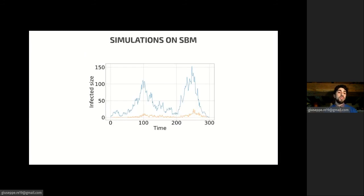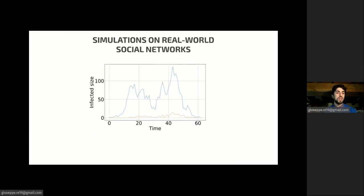We can see here that the number of infected nodes over time for a certain range of parameters gives twin peaks, so recurrence. In orange, you see the number of second infections. So you can see that there are a very small number of second infections, but they're crucial to the onset of recurrence. And the same thing happens on real-world social networks too. Here I just showed you a couple of plots, but you can find more in the paper.